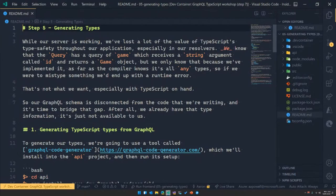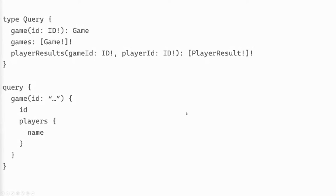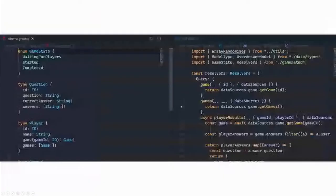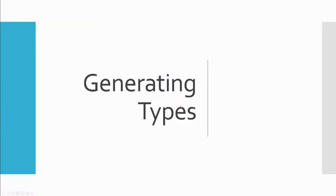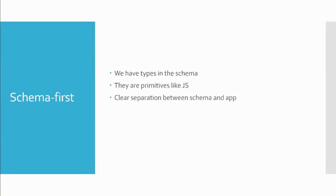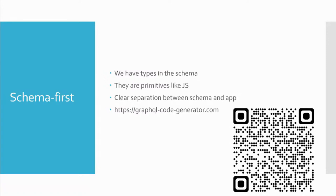There are two schools of thought when it comes to type generation. The first is a schema-first approach: we have a type system represented within our GraphQL schema that kind of looks like TypeScript type definitions — they're not exactly the same but they have clear influence. A schema-first approach allows you to have a really clear separation between the types in your schema and the application you're building, so you don't end up with them being overly bound to each other. I like to use a tool called GraphQL Code Generator to do this generation.